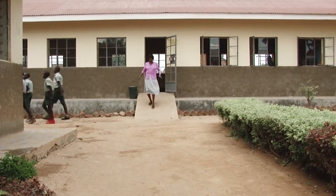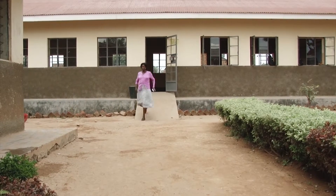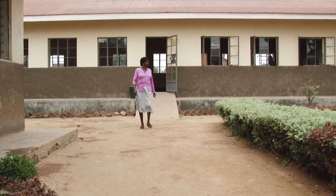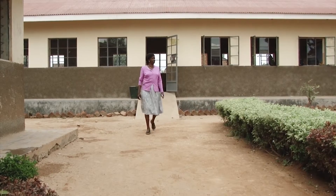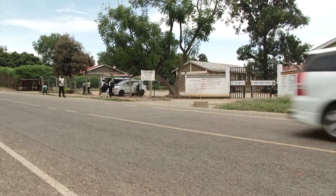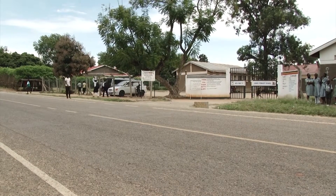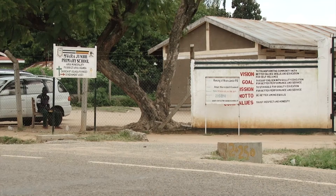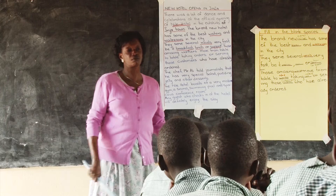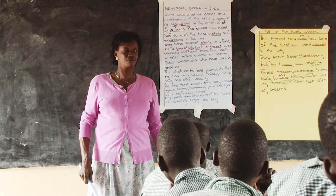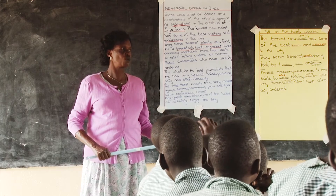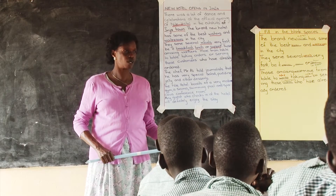Chandiru Josephine is a teacher at Mvara Junior Primary School. The school is found in Arua town in the West Nile region of Uganda. She is an English teacher for Primary 5 and Primary 6, and her lesson for the day is on hotels.